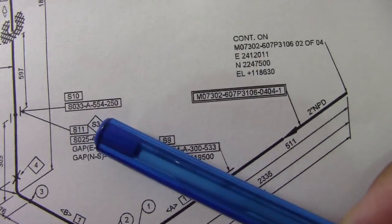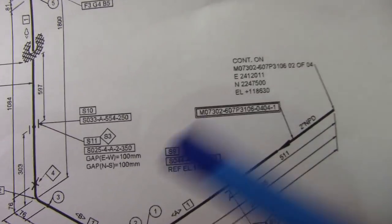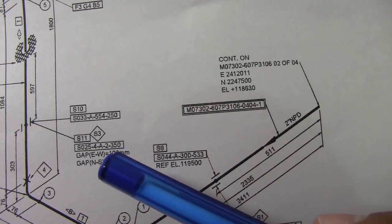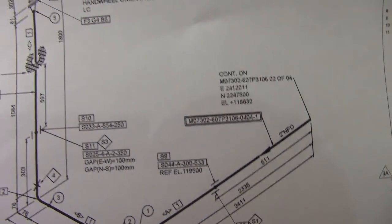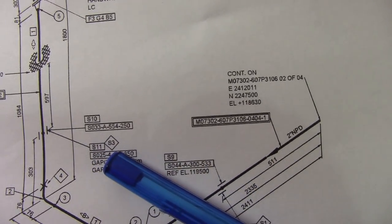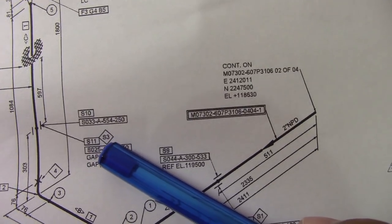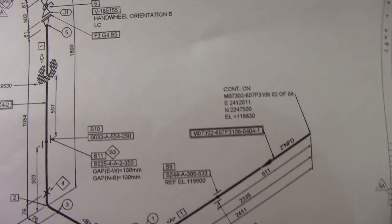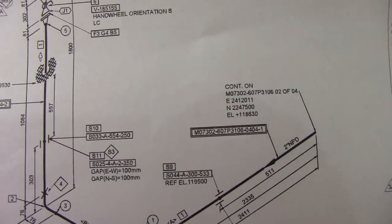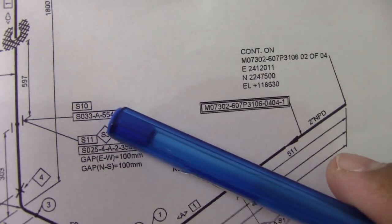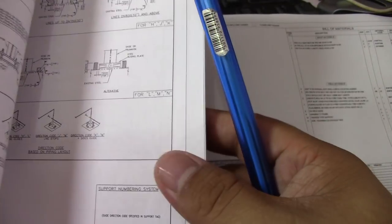S025 is Category A because it is a welded type. Now, if S025 is already installed but the guide is not yet installed — since the guide is not attached or welded to the pipe, that guide is only Category B. S025 not installed is Category A because it is attached to the pipe.